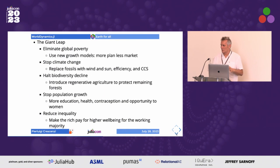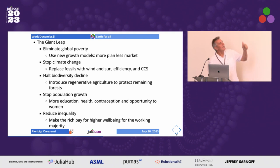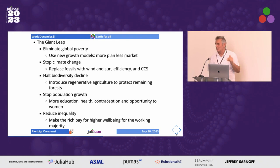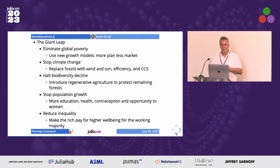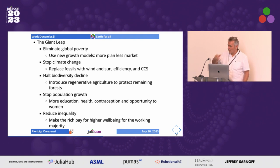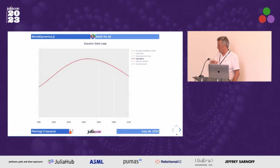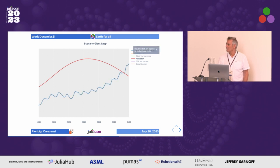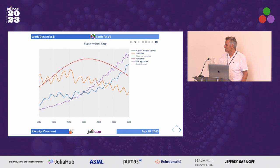And then they say — sincerely I cannot be serious looking at this slide — if instead we do a 'giant leap': eliminate global poverty, stop climate change, halt biodiversity decline, stop population growth, and reduce inequality. I mean, this is really a giant change. I don't know what you think about it, but I'm not so optimistic about our future. But anyway, if you do this, formalizing it by changing some variables and parameters, things go better: the population will still decrease, which is something we want, but the average well-being index will increase and inequality will decrease, while economically we are still going to grow.